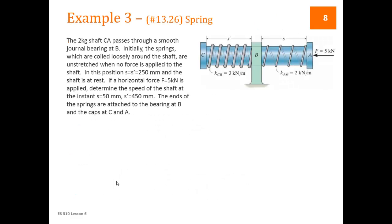Here's the spring example. We have a bobbin or shaft — the dark blue part — that is two kilograms. There are two different springs attached to both ends, connected to the support at B. We're going to push on end A, compressing the first spring and elongating the second spring. Initially both springs are the same length and unstretched. Then we apply a force and shift the blue bobbin over to where S is 50, so this side becomes 50 and the other side becomes 450.